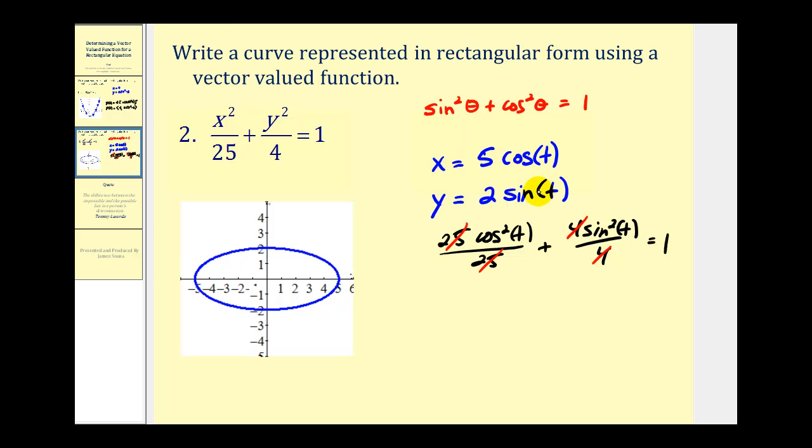This makes the transition to a vector-valued function easy: r(t) = 5cos(t)·i + 2sin(t)·j, or in component form, ⟨5cos(t), 2sin(t)⟩.